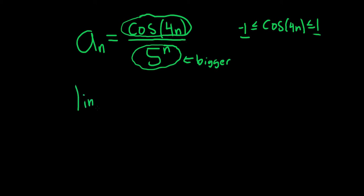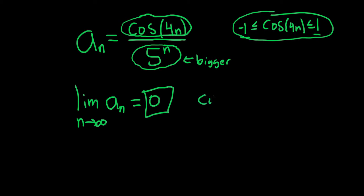And so when you take the limit as n goes to infinity of a sub n, you simply get 0 because the top is trapped between these numbers and the bottom is getting bigger. And that would be the limit, and the answer would be converges.